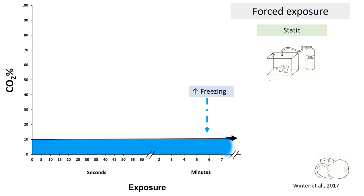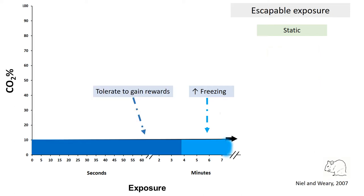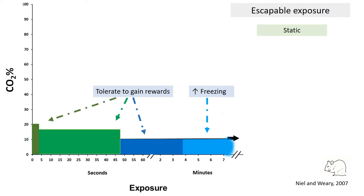Forced exposure to 10% static CO2 induces freezing in rats. However, rats tolerate these concentrations in order to gain rewards if escape is possible. Tolerance decreases with CO2 concentration. Rats only tolerate about 2 seconds concentrations of CO2 of around 20%.